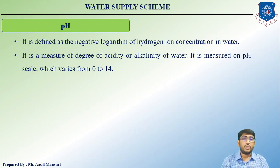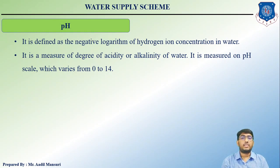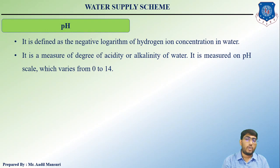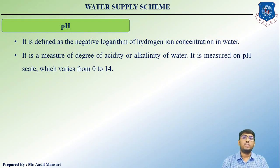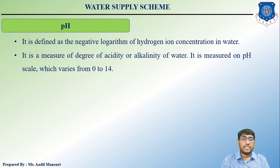If the pH value is between 0 and 7, the water or any fluid tends to be acidic. If the pH value is between 7 and 14, the sample is basic. If pH equals 7, then the sample is neutral.